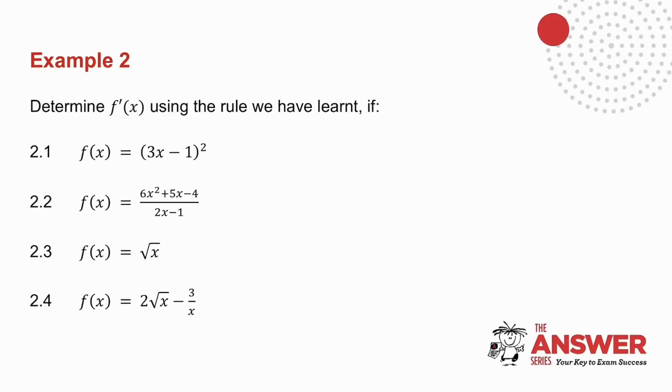I've given you four examples. What you're going to have to do in all of these is you're going to have to do some manipulation before you take the derivative. So in 2.1, you're going to need to square the bracket. 2.2, factorize the trinomial. 2.3, write this as an exponent, and 2.4, also write it as an exponent. So what I want you to do is pause the video, try these four, and then we'll do them together.